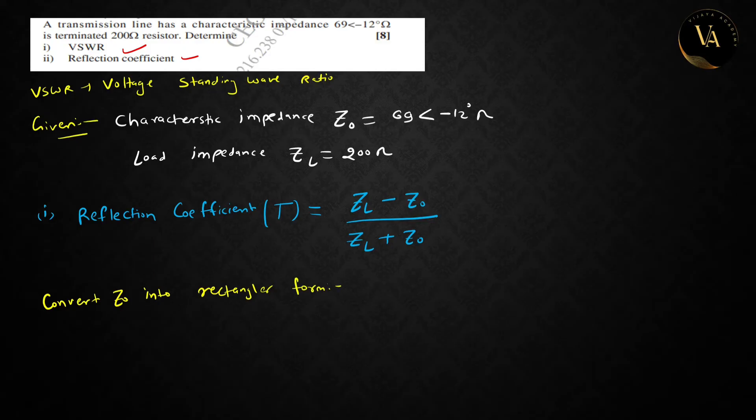Rectangular form, I will tell you how you can find it in calculator. You have to shift and minus, you can see REC. And then 69, then press comma and minus 12.